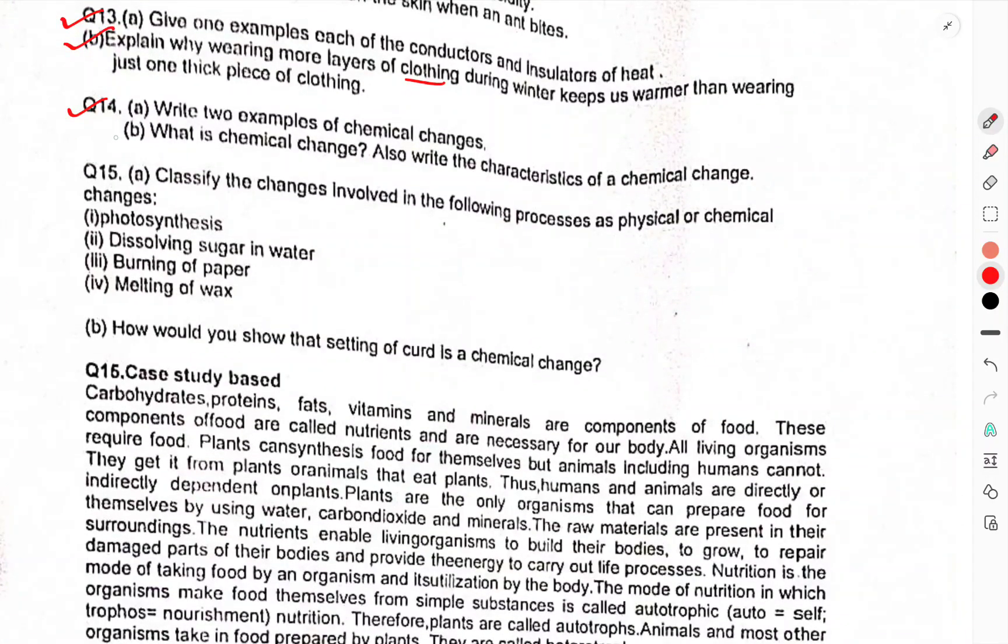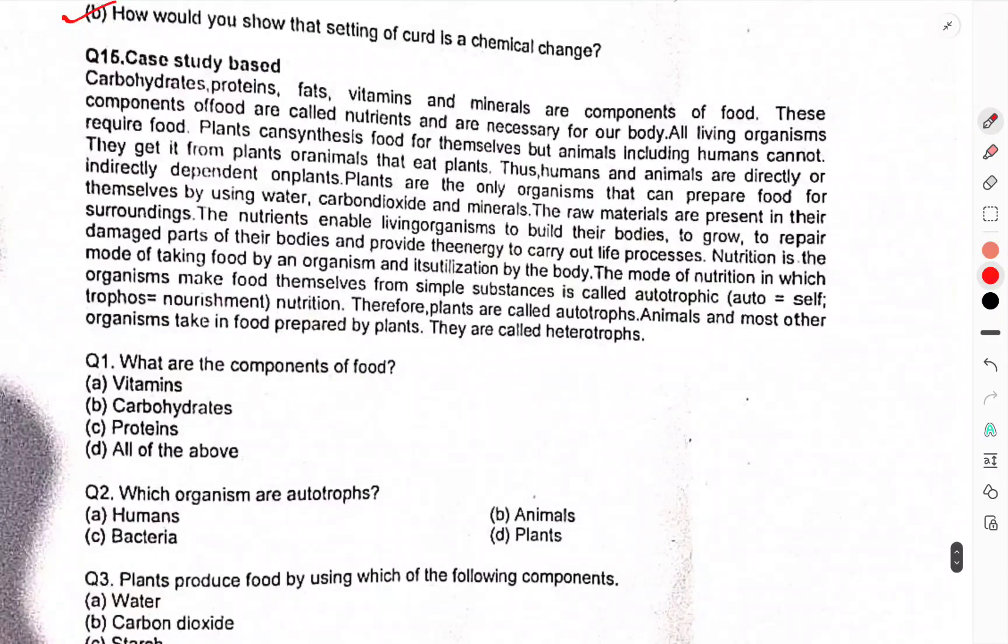Explain why wearing more layers of clothing during winter keeps us warmer than wearing just one thick piece of clothing. Question 14: Write two examples of chemical changes. What is a chemical change? Write the characteristics of a chemical change. Classify the changes in the following as physical or chemical: dissolving sugar in water, burning of paper, melting of wax. How would you show that setting of curd is a chemical change?